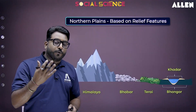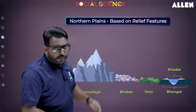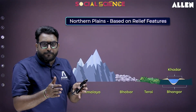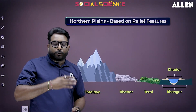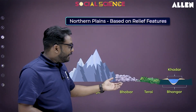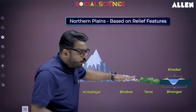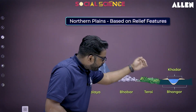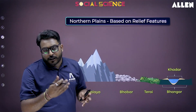After descending from the mountains, rivers collect pebbles in a narrow belt parallel to the Shivaliks, 8 to 16 kilometers wide, known as the Bhabar belt. Streams and rivers disappear in this belt as they flow beneath boulders. These rivers and streams re-emerge at the Tarai region, which is a wet, swampy, and marshy region.